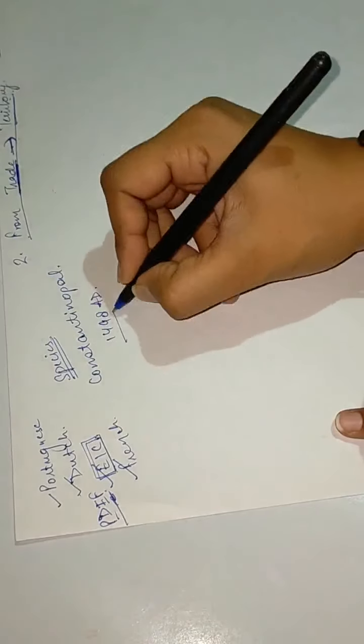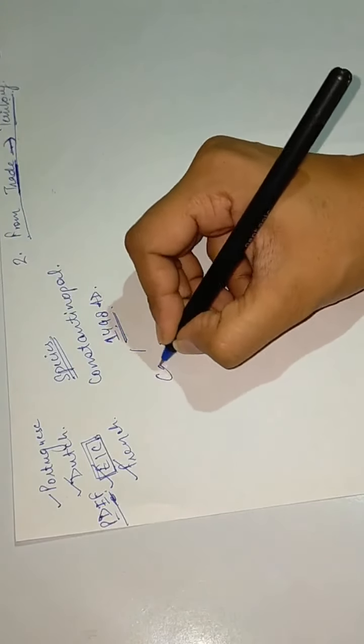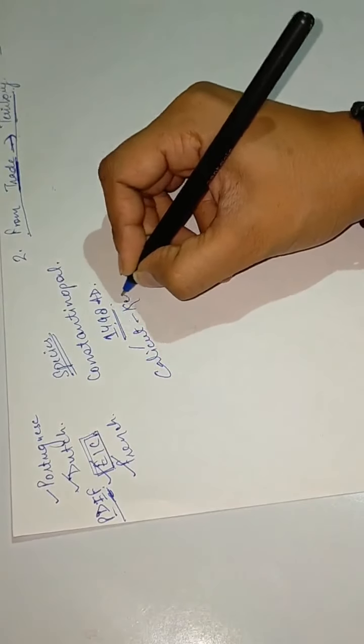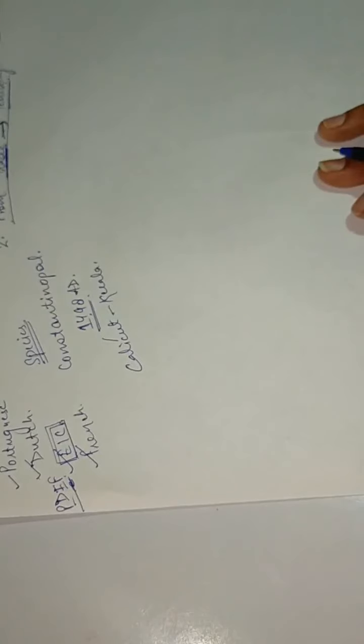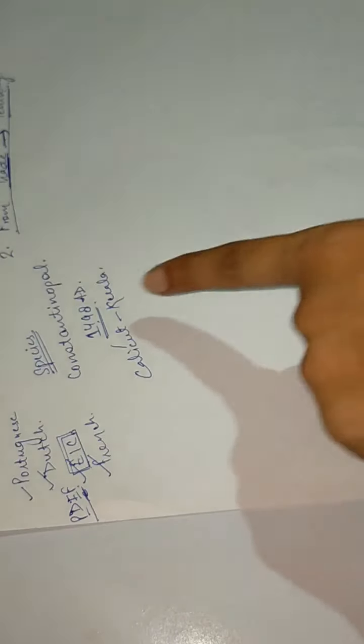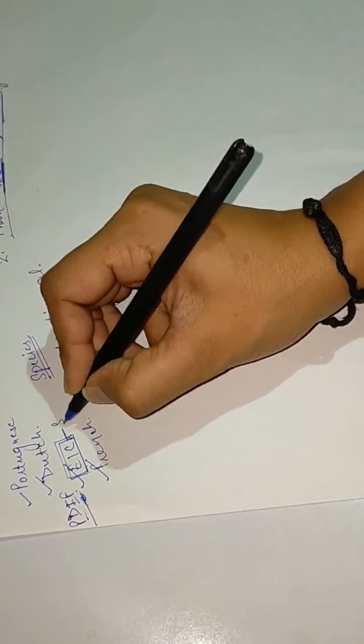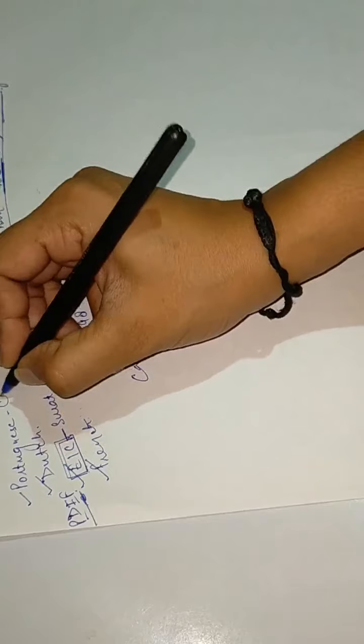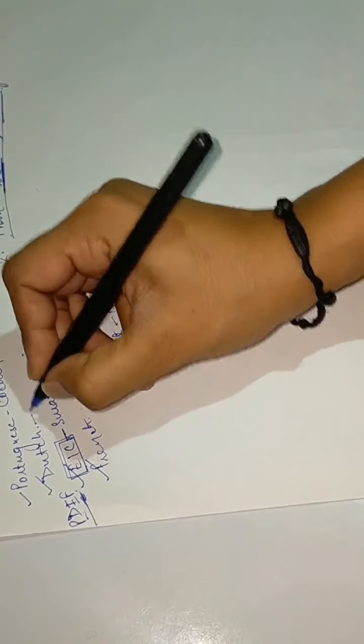The sea route was discovered and he reached here at Calicut. Calicut is a place in Kerala. Christopher Columbus from Spain also tried to find a route to India but got confused and discovered the US instead. So the first to discover the sea route to India was Vasco da Gama. East India Company set up their first factory in Surat. Portuguese in Cochin, Kerala, and Masulipatnam in Andhra Pradesh.